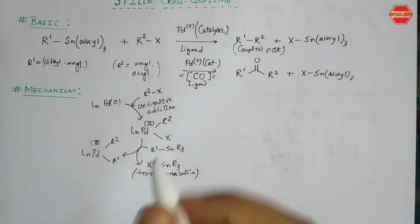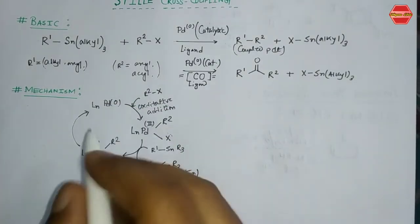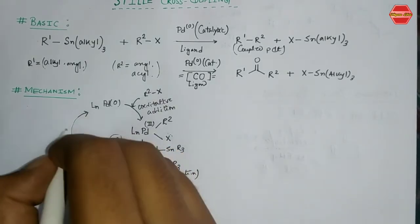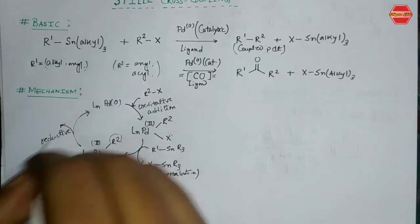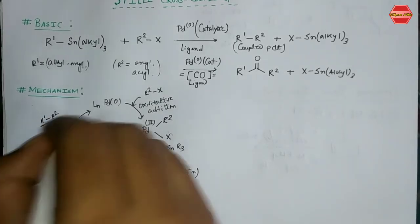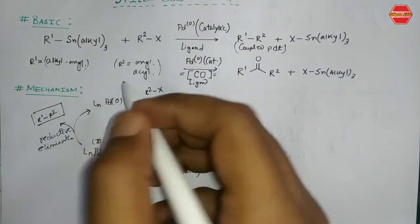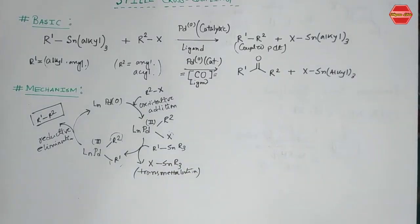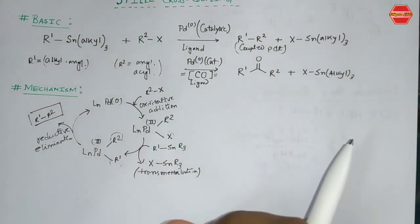The final step is reductive elimination. This step is cis in nature, so the groups can leave from the system. From reductive elimination, we get R1 and R2 as the coupled product, and finally palladium(0) is regenerated, completing the catalytic cycle. This is all about the mechanism of the Stille cross-coupling reaction.